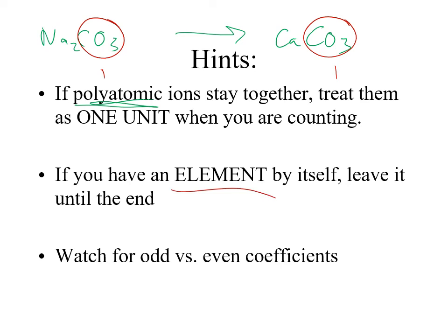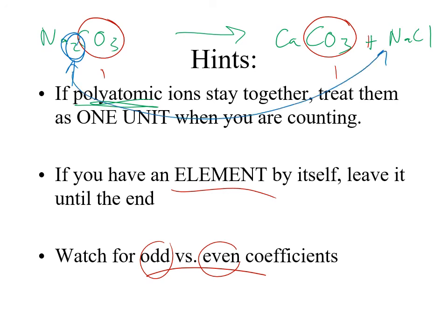Leave any elements until the end — it's always harder to balance the compounds first because when you put a coefficient it could change more than one thing. Do compounds first, elements until the end. Also watch for odd versus even coefficients: if you have a 2 in the formula, that's a hint the coefficient on that side will need to be even, so there's no sense trying odd numbers during trial and error — that can save time.